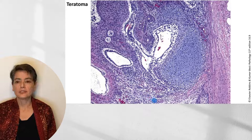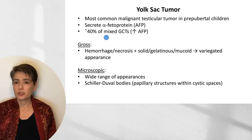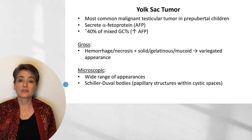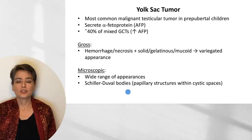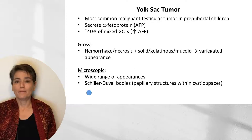Yolk sac tumor is the most common malignant testicular tumor in pre-pubertal children and is associated with secretion of alpha-fetoprotein. It is commonly part of mixed germ cell tumors — about 40% — and we will recognize this because these individuals will have increased AFP. Grossly, it has a variegated appearance due to hemorrhage, necrosis, and differentiation into solid, gelatinous, or mucoid tissue. Like embryonal carcinoma, it can have a wide range of appearances. What is expected of medical students is to recognize Schiller-Duvall bodies, which are associated with yolk sac tumor, whereas this wide range of appearances makes it difficult even for pathologists, which is why AFP can support the diagnosis.